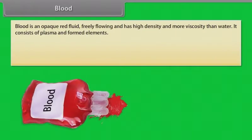Blood is an opaque red fluid, freely flowing, with high density and more viscosity than water. It consists of plasma and formed elements.